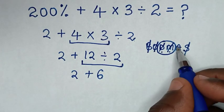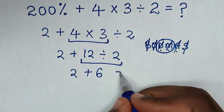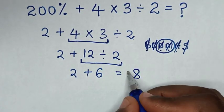Then here the last operation is this addition. So this plus this is equal to 8. Therefore this is our final answer.